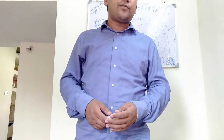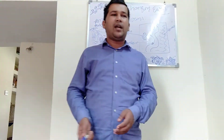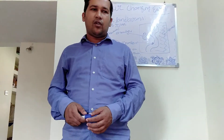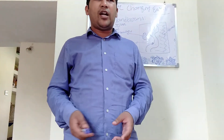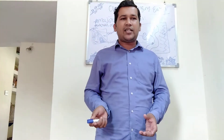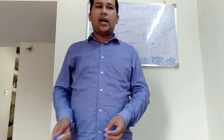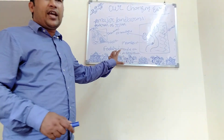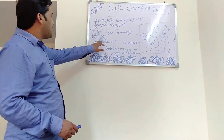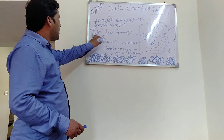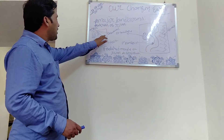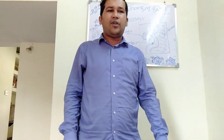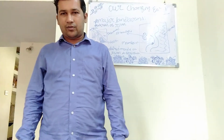Next is delta. Delta is formed by the deposition of sediments carried by a river as the flow leaves its mouth. You can see in the diagram — these are the delta, formed by the sediments carried by the river as the flow leaves its mouth at the tributaries joining the main river.